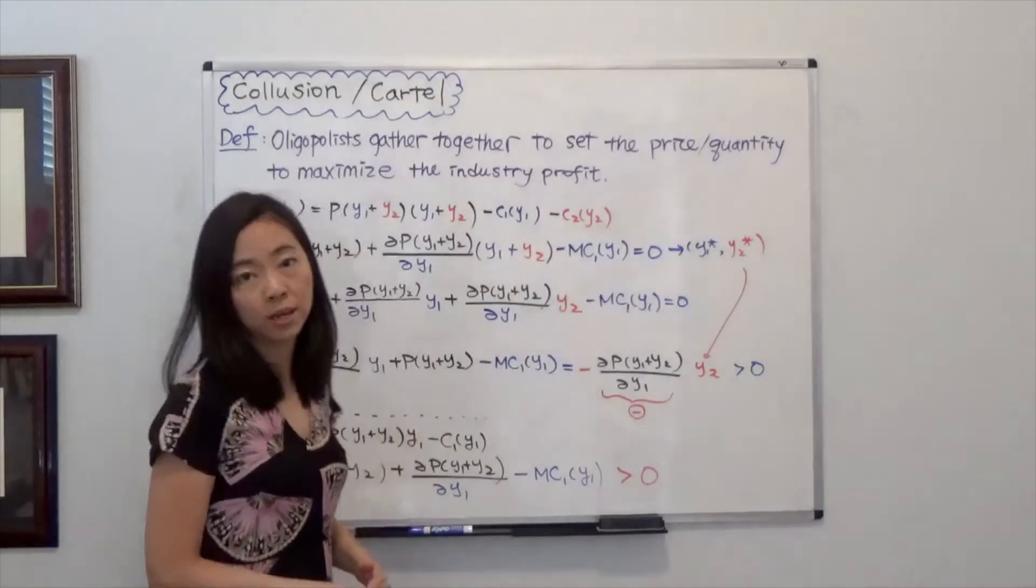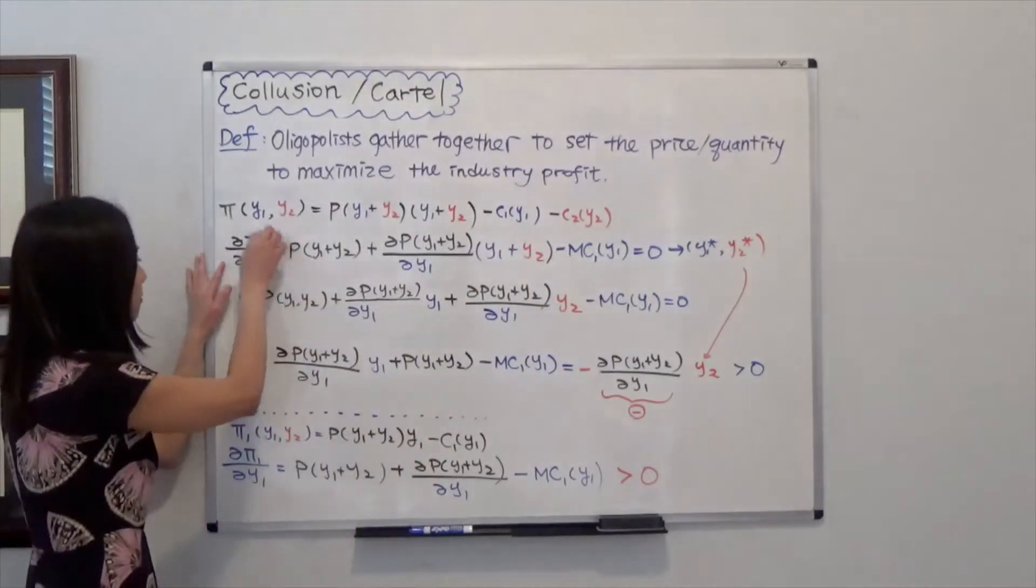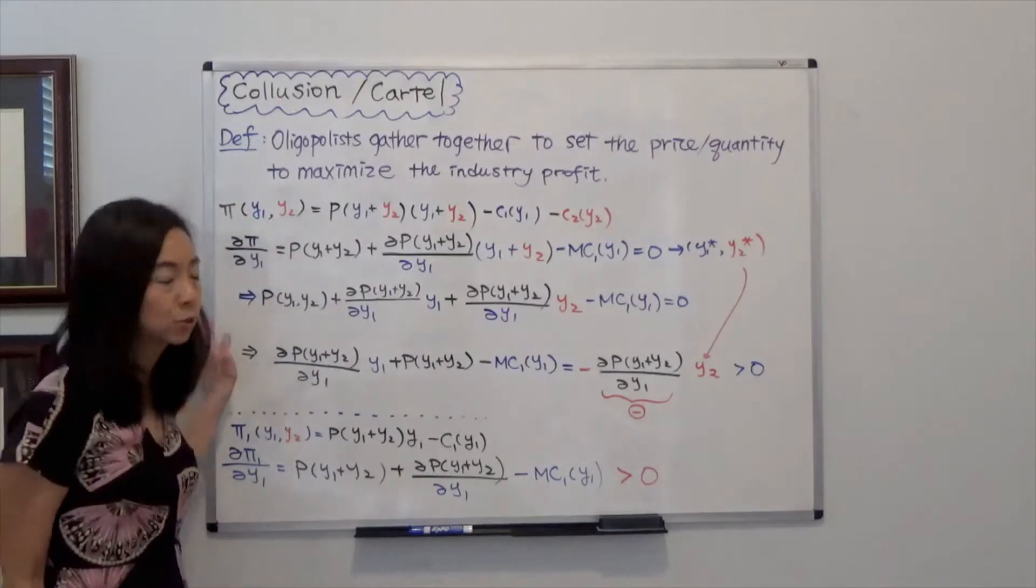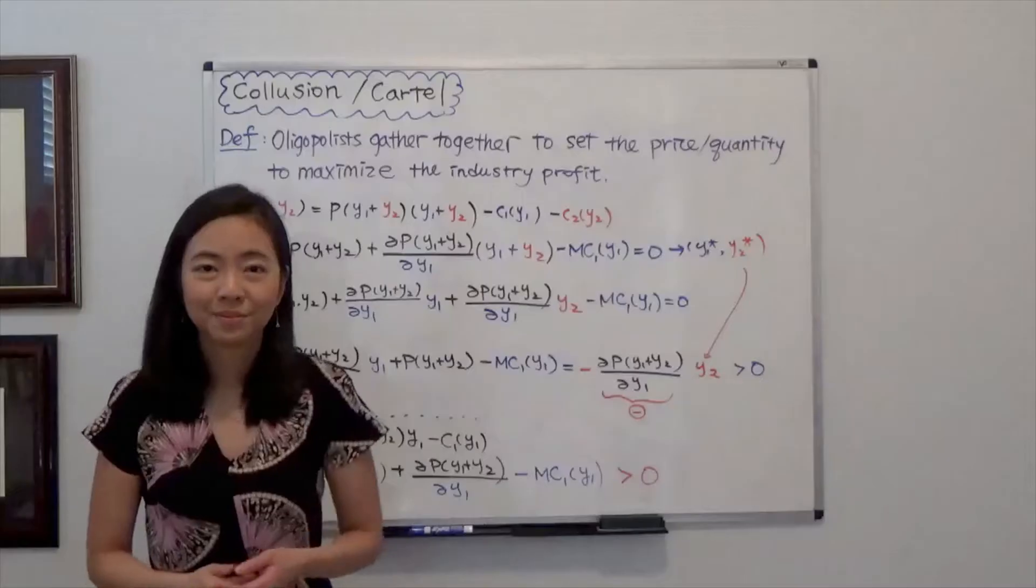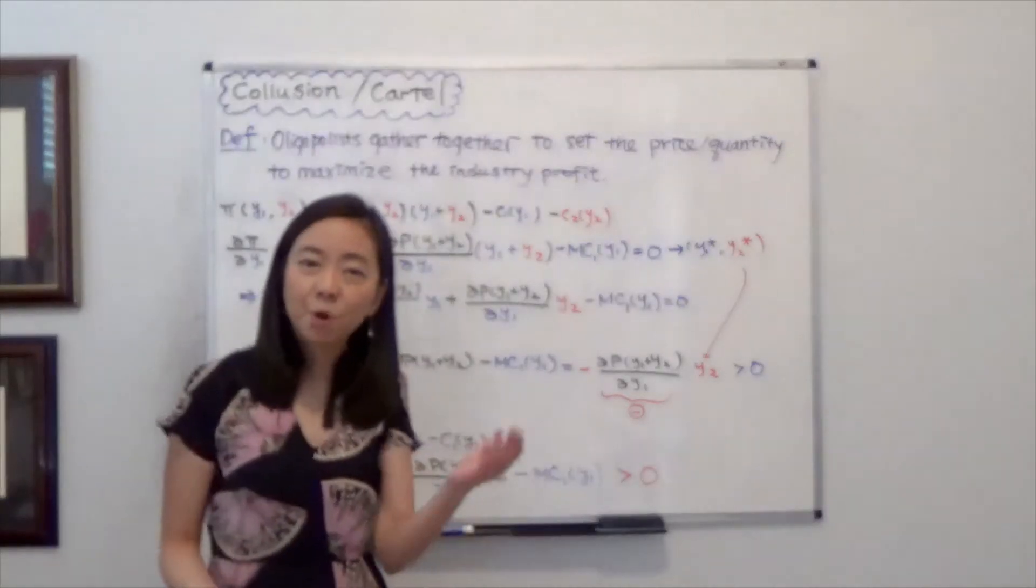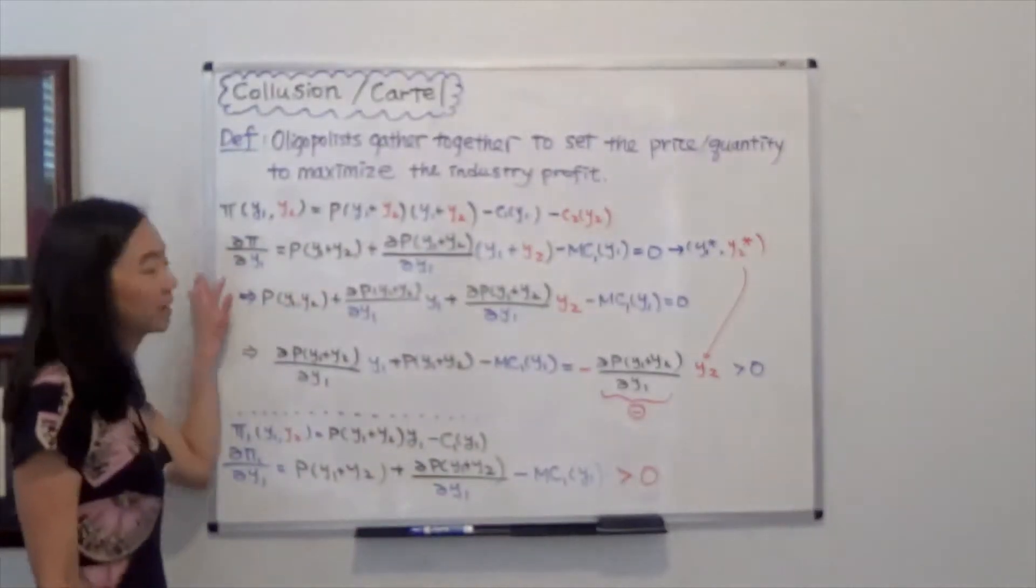To maximize the profit, we are going to take partial derivative of pi with respect to Y1 and Y2, and we set them equal to 0. Due to the space limit, I'm only going to show you partial pi, partial Y1.